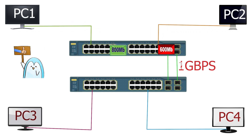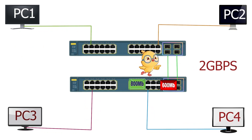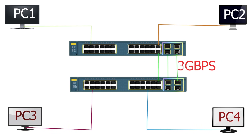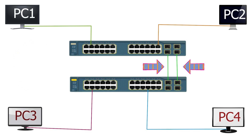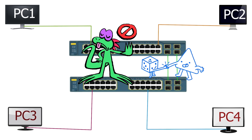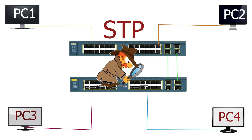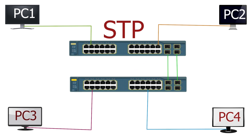The second solution is more convenient and flexible. The administrator can create an additional link on any available ports, and if more bandwidth is required, can create more links. However, this solution has a technical issue. Connecting two switches with more than one link creates a switching loop. A switching loop blocks the network from functioning. Switches use the STP protocol to find and remove switching loops.